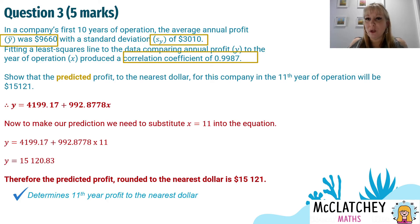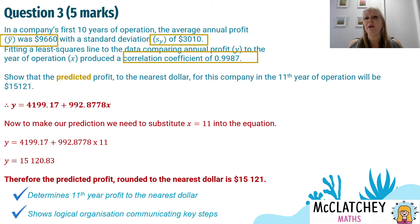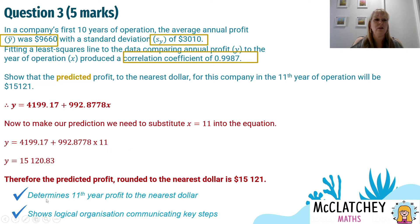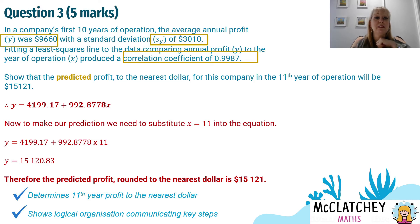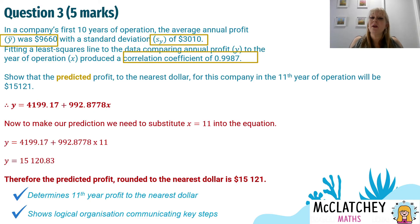It was a challenging question, and rounding to the nearest dollar was very important for the last part. There was also a mark for showing logical organization and communicating the key steps — that mark isn't on every question, but being able to show your working clearly and explain what you're doing is really important. Use correct symbols, do correct rounding, and explain what you're doing — for example, write 'sub X equals 11.' Little things like that show the marker you know where you're going. Many people would have stated some variables then stopped, not knowing what to do. The tricky insight was recognizing that when time is on the X-axis and profit is on the Y-axis, it's a time series — and understanding that a time series can also use a least squared regression line is an important thing to remember.